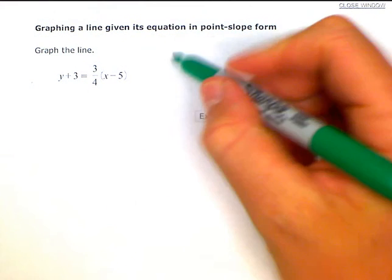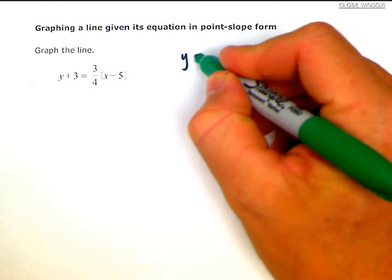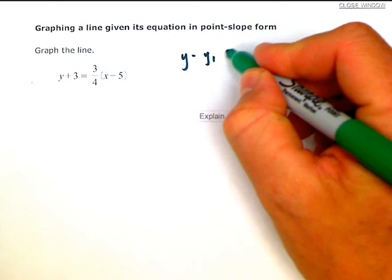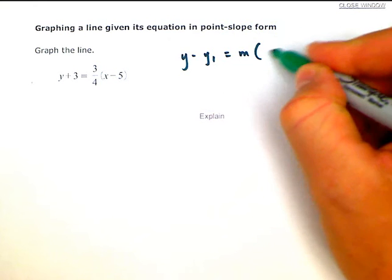Let's go ahead and write it out. Y minus Y1 equals our slope times X minus X1.